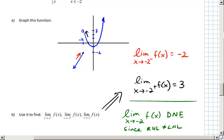So since the right-hand and the left-hand limits don't match, the two-sided limit, the limit as x approaches negative 2 of f(x), does not exist.